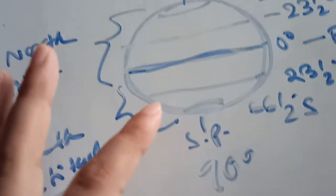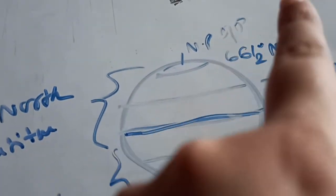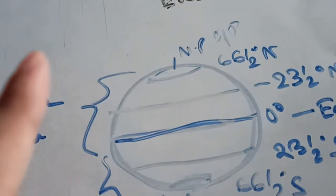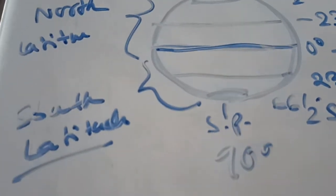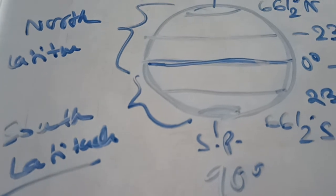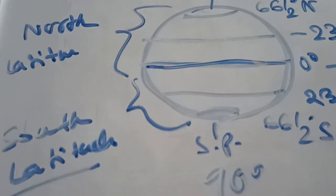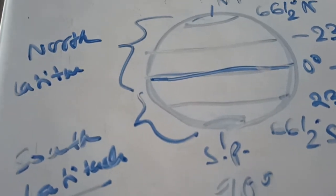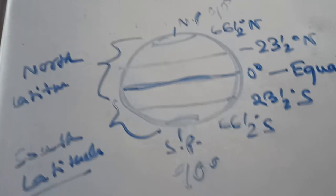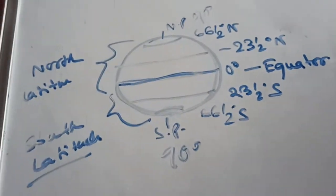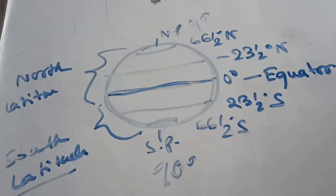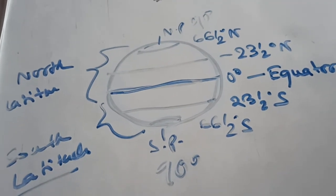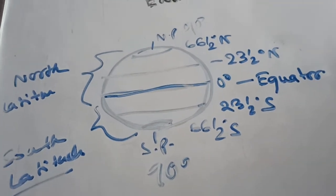The last ones are the North Pole at 90° north and the South Pole at 90° south. Both are the smallest parallels of latitude and are merely points. So these are the seven important parallels of latitude that you need to know. This is the end of this video; I will continue with the next portion in the next video. Thank you everyone.